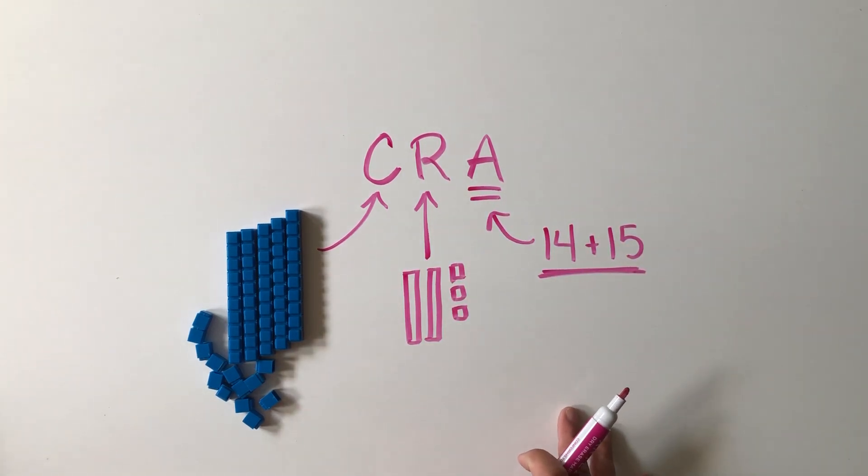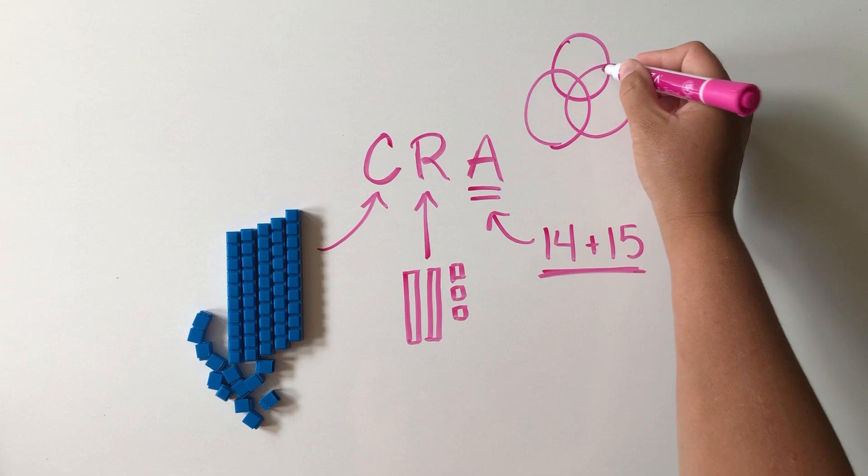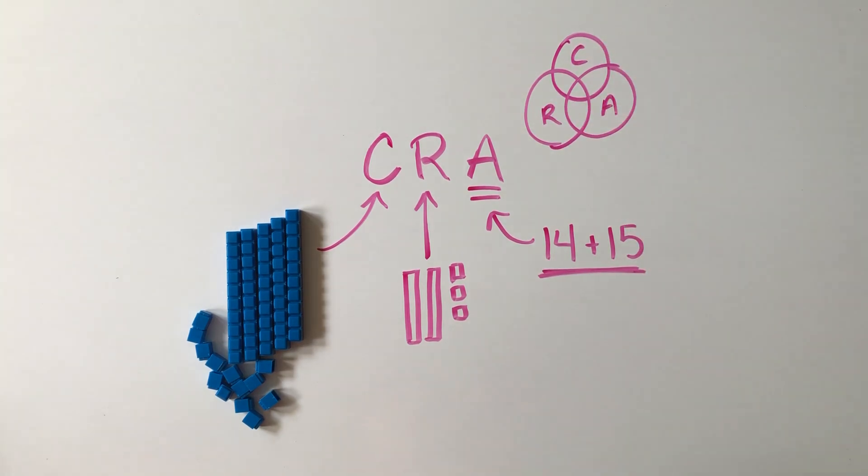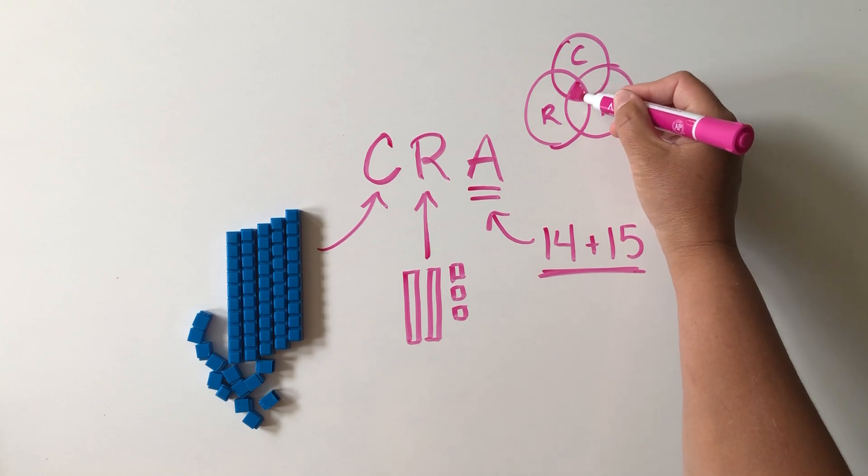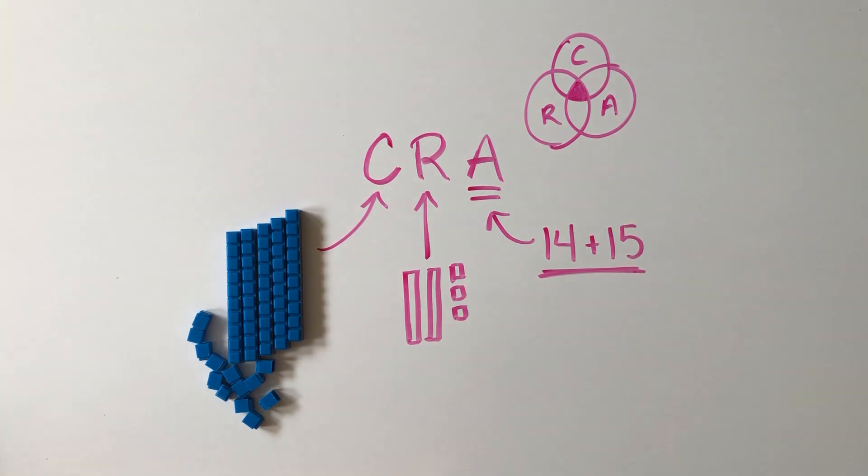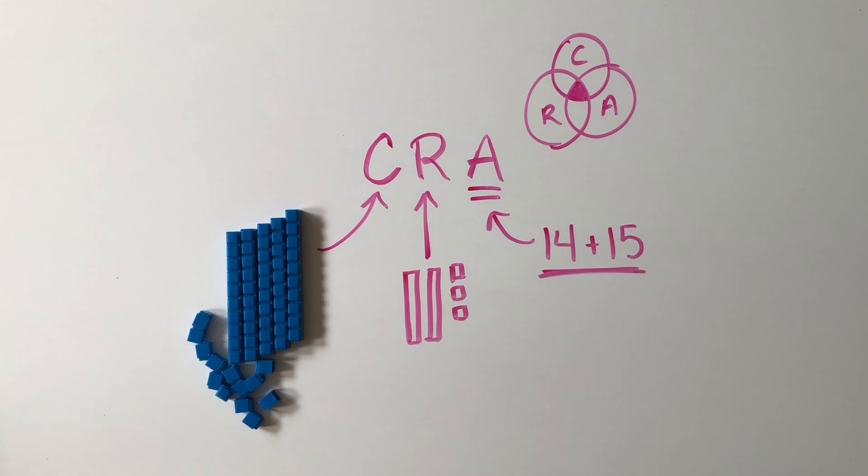We want to start with concrete, and even better, we want to try to incorporate all of these phases into as many lessons as we can. If you think of the CRA model like a Venn diagram, we want to aim as much as possible to get our lessons right there where we're incorporating some concrete experience, some representational activities, and our abstract representations as well.